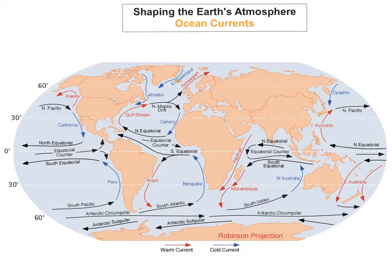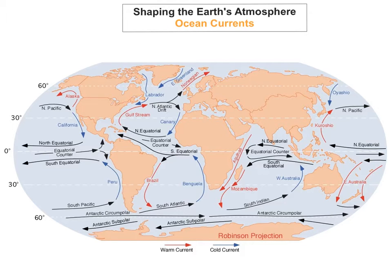The first thing you need to know is the red currents. The red ones are the warm currents. These include Alaska, the Gulf Stream, Norwegian, Brazil, and so on. All these red ones are warm currents.